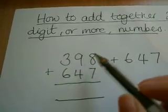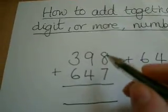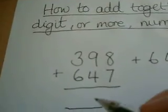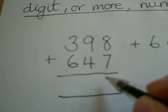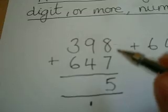Always start from the right side. That's really important. 8 add 7 is 15. I don't just put the 15 in. I put the 5 units in and I carry the 1 over. It waits down there on the doorstep.